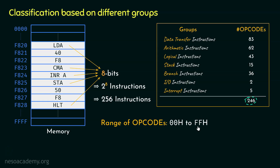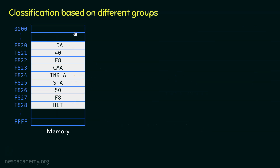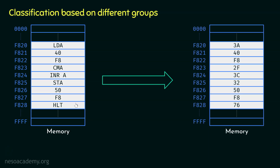You might wonder: we were storing instructions like LDA, CMA, INRA, STA, HLT — so what are the op codes in hexadecimal? Within the memory the program is not saved as mnemonics; it is saved as op codes. Instead of LDA, the op code 3A is stored. CMA is stored as 2F, INRA as 3C, STA as 32, and HLT as 76.